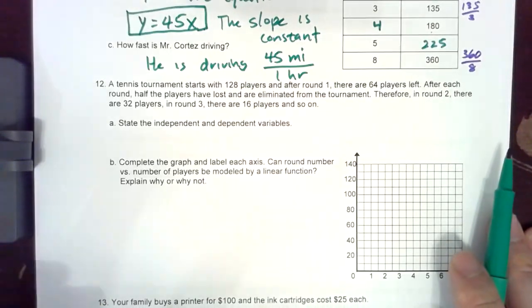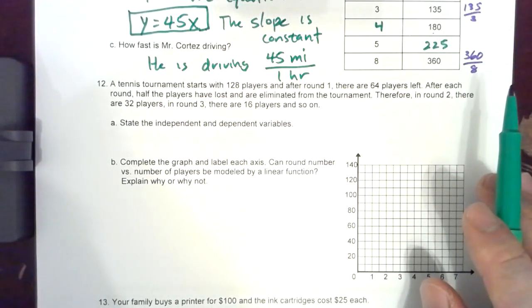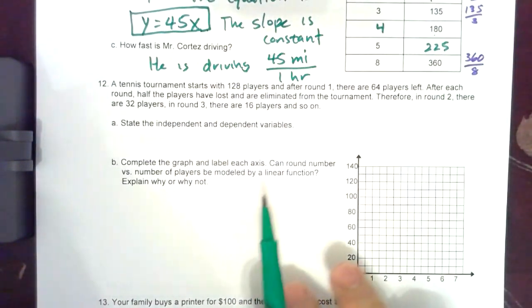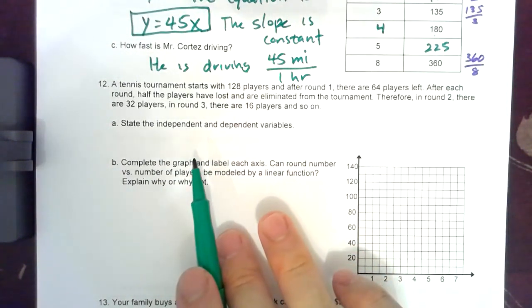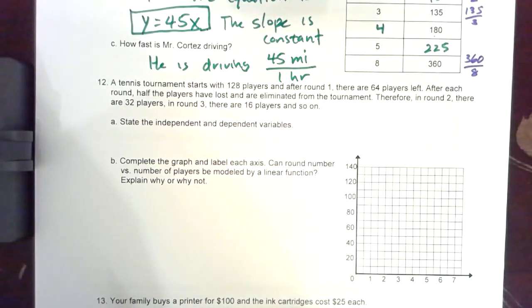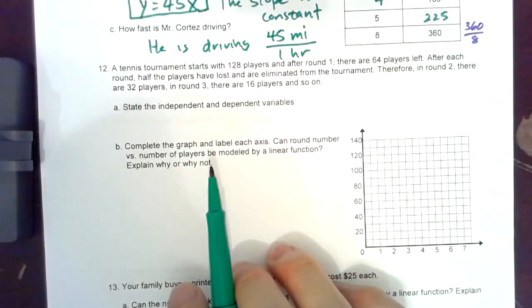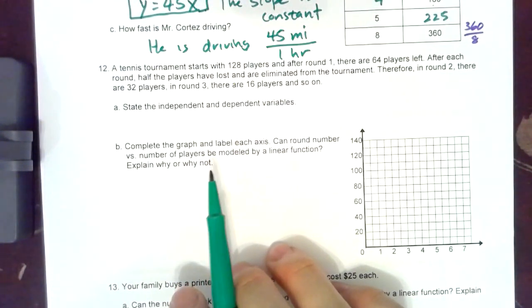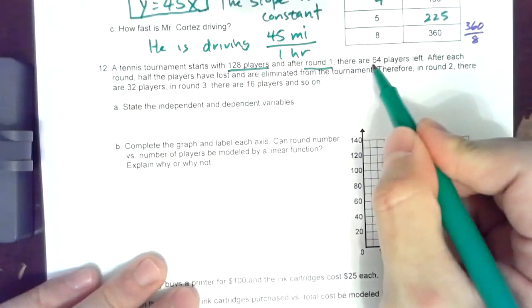So number 12, a tennis tournament starts with 128 players and after round one there are 64 players left. After each round half the players have lost and are eliminated from the tournament, it's kind of like how a tournament works. Therefore in round two there are 32 players, in round three there are 16 players and so on.